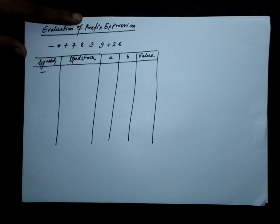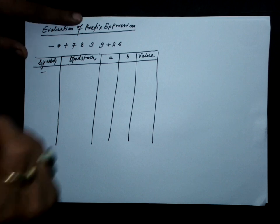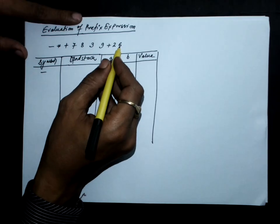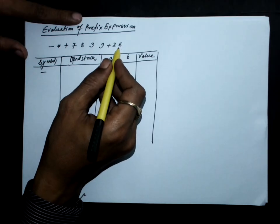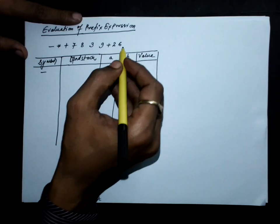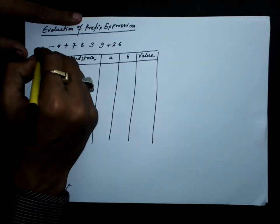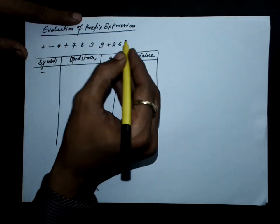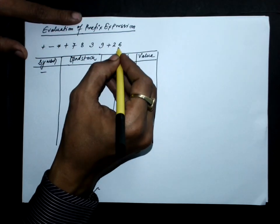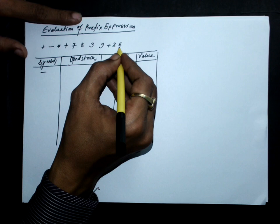The first step for the prefix evaluation is to reverse the given expression. If I reverse this given expression — let's say this is the expression — then if I reverse it we get the reversed form.